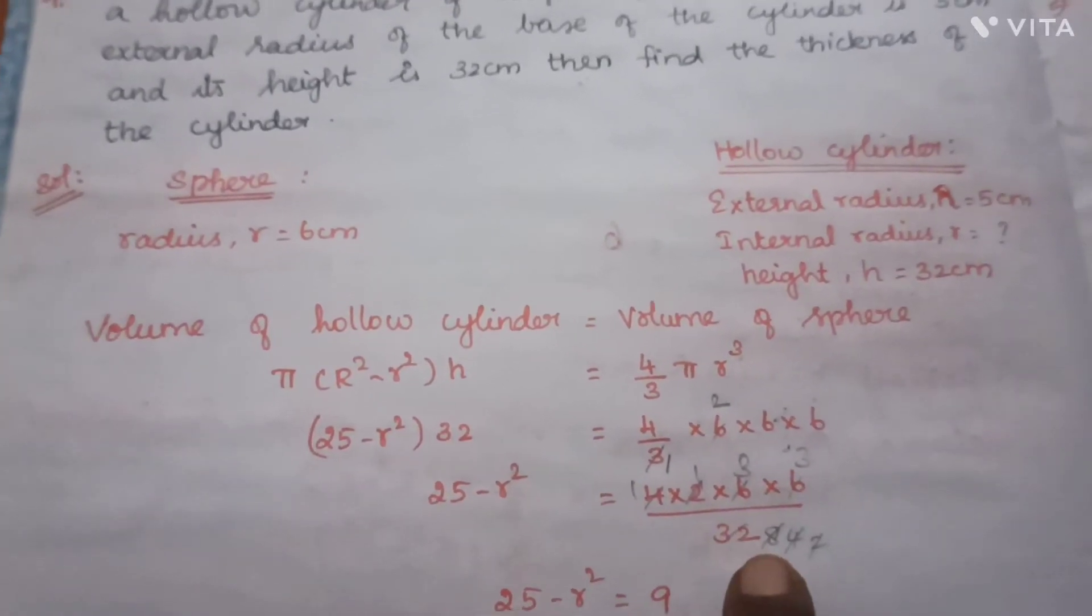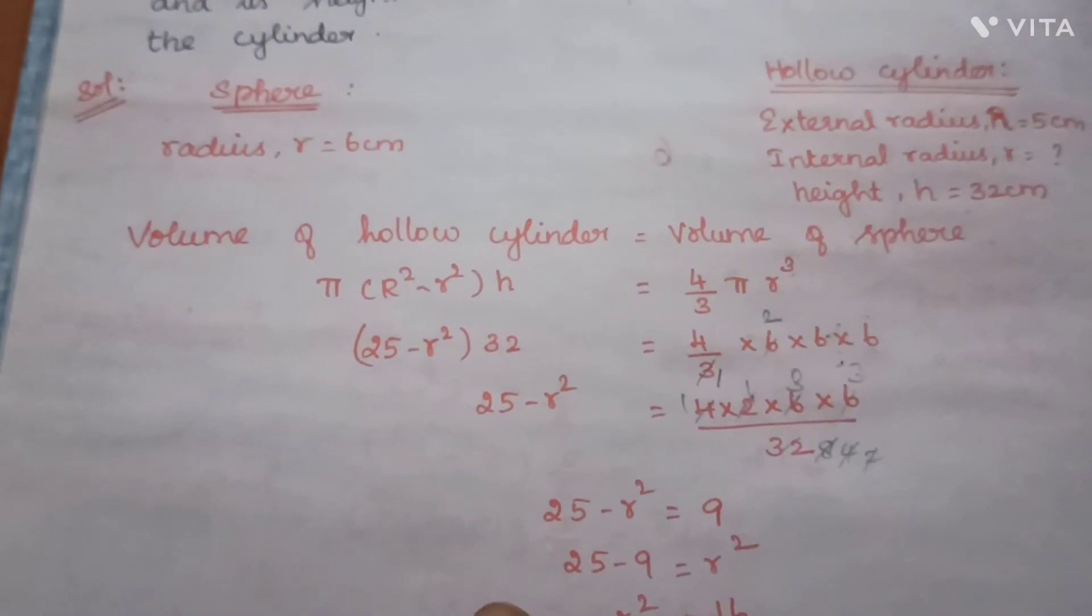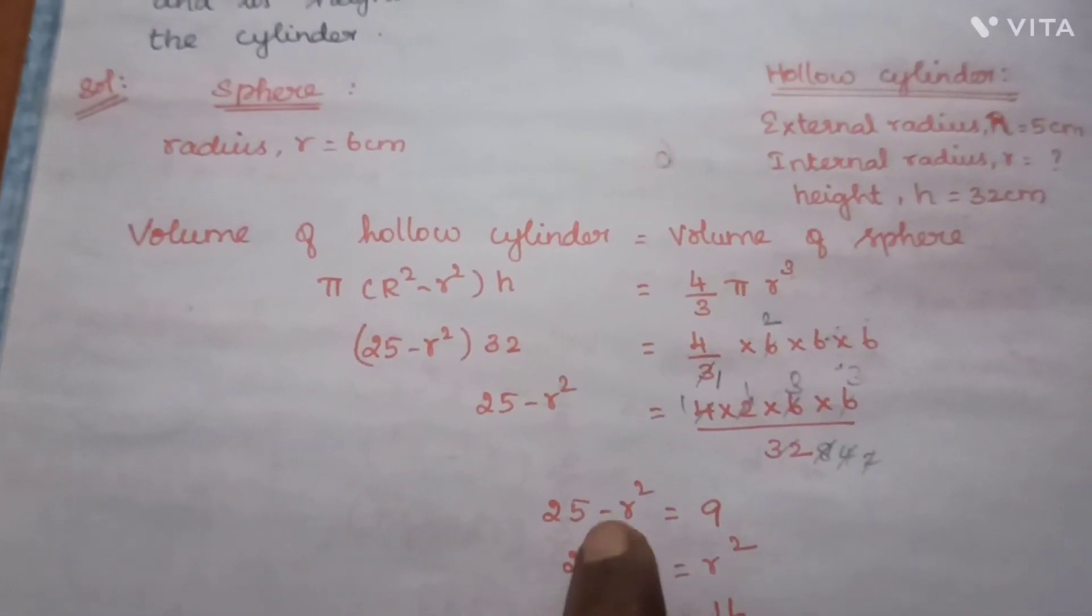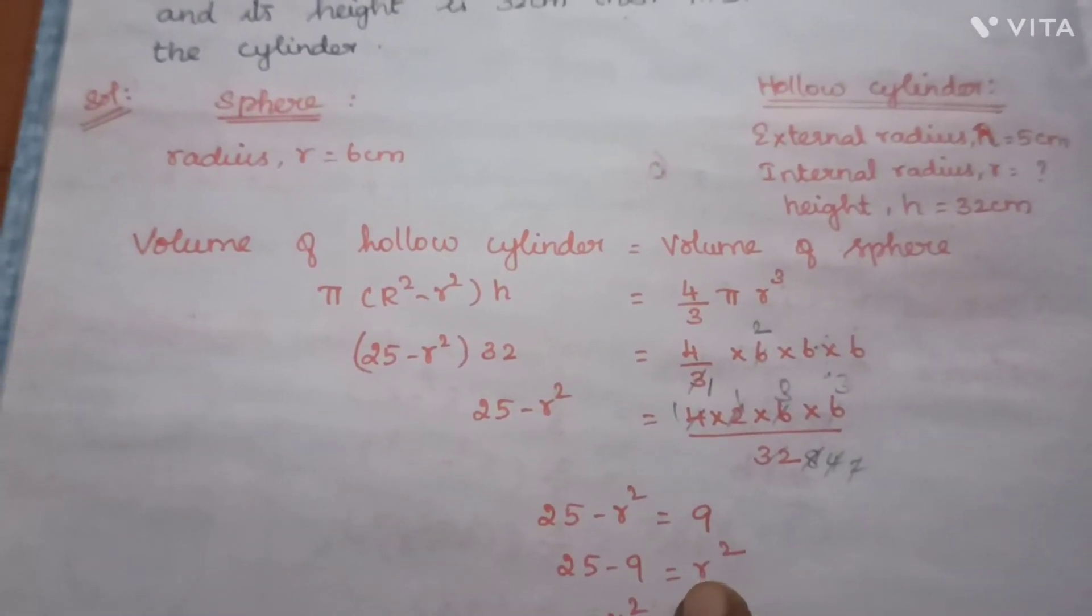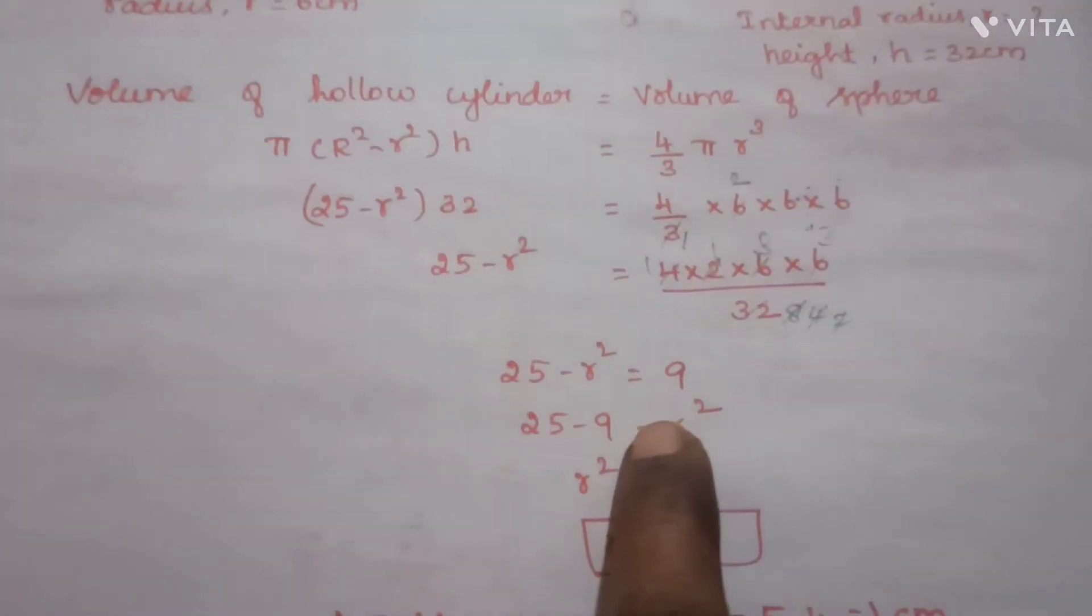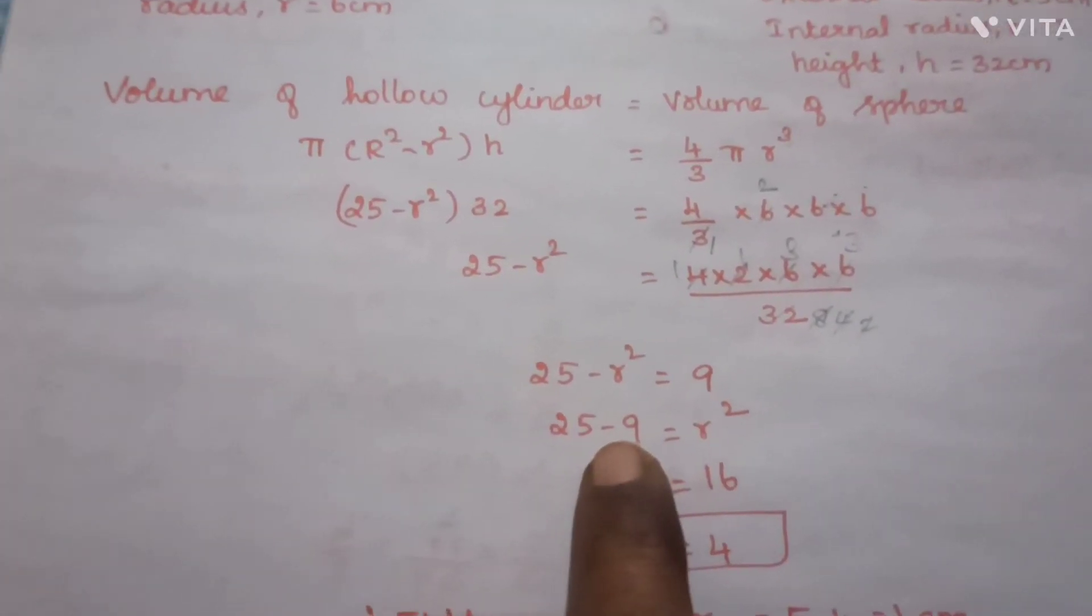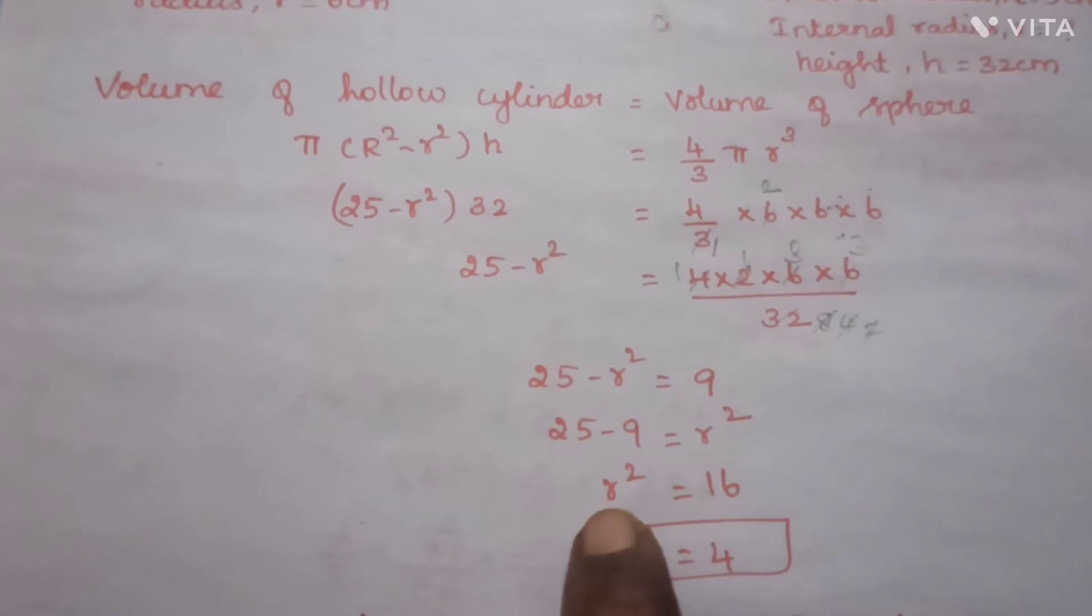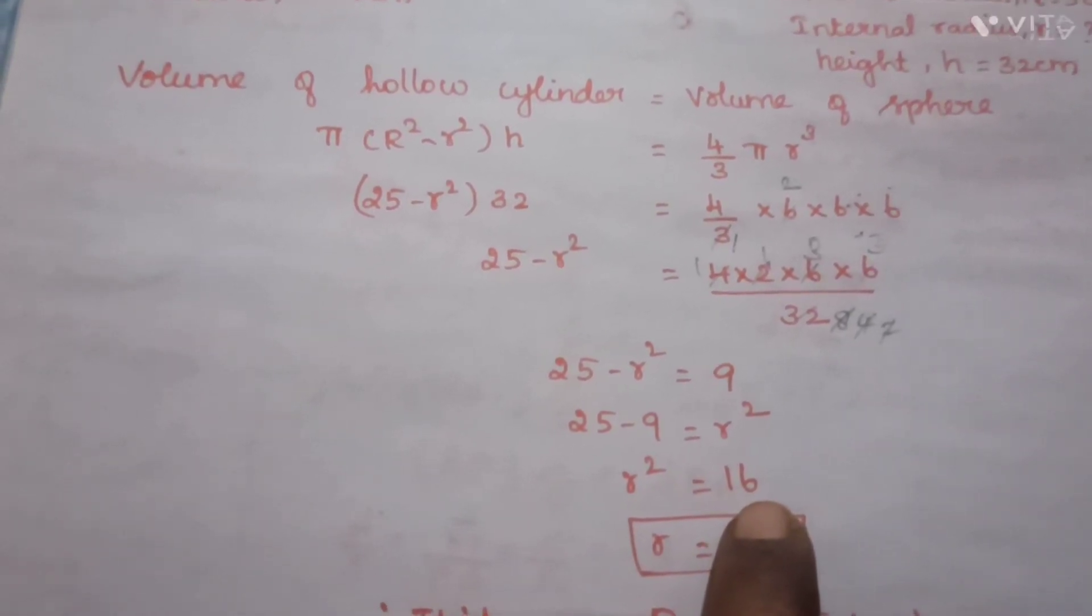So remaining is 9. So 25 - r² = 9. Moving 9 to the other side: 25 - 9 = r². This gives r² = 16.